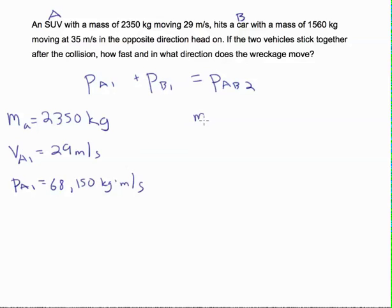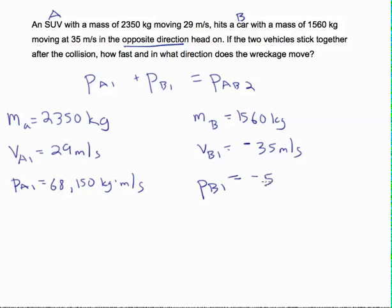And our mass of B is 1,560 kilograms and our velocity is negative 35 meters per second because it's in the opposite direction. So one of these velocities has to be negative, and I just chose the SUV to be positive because it came first.